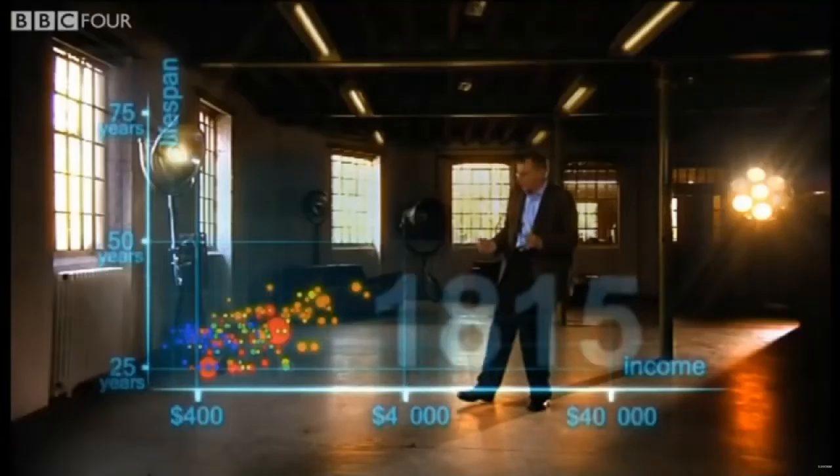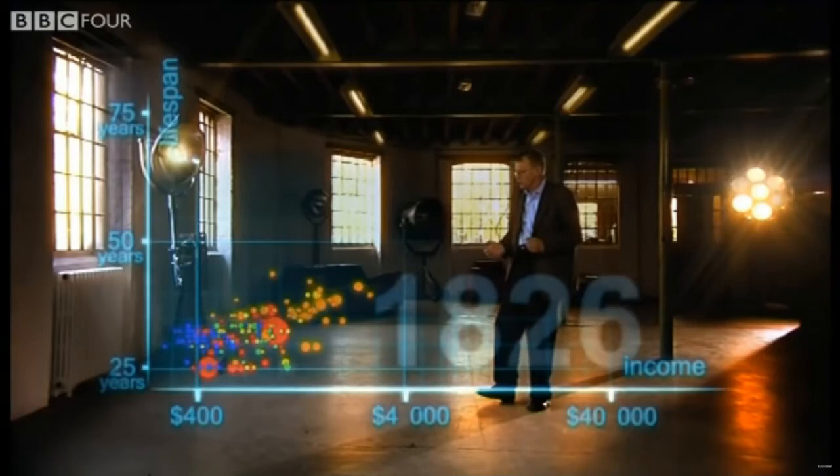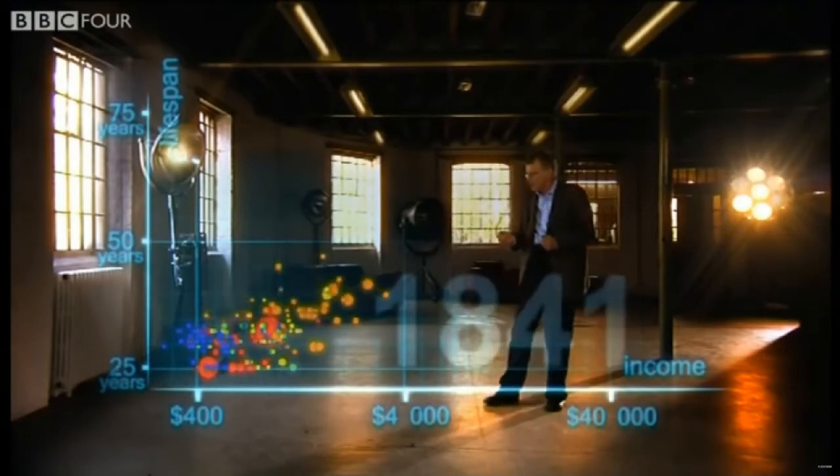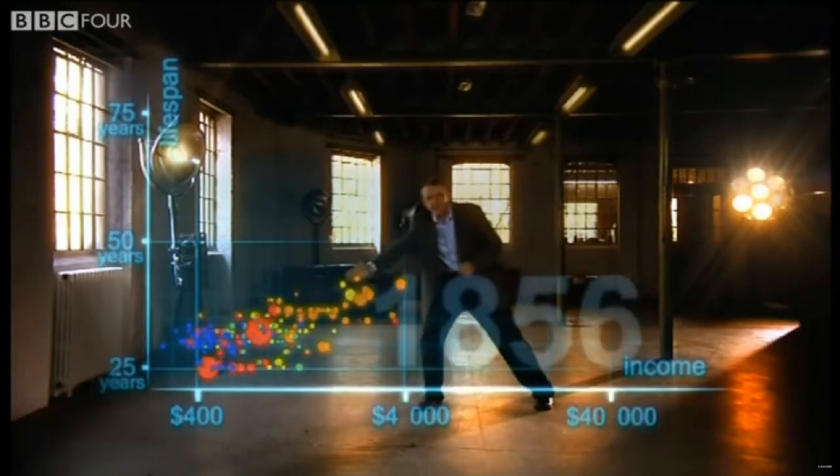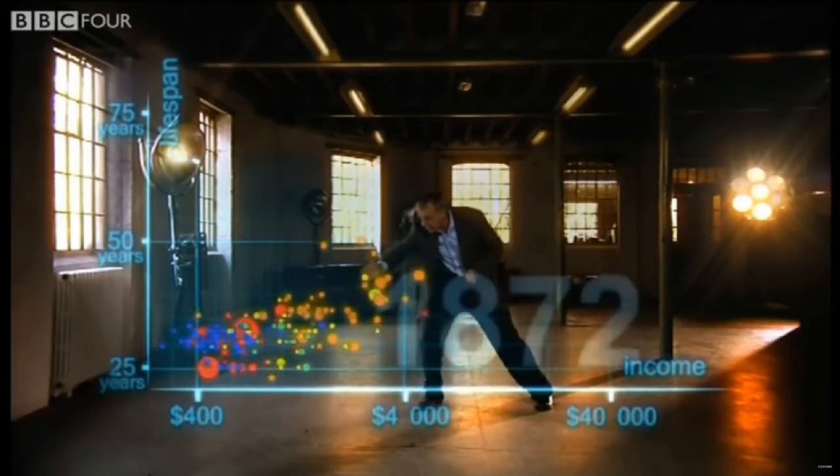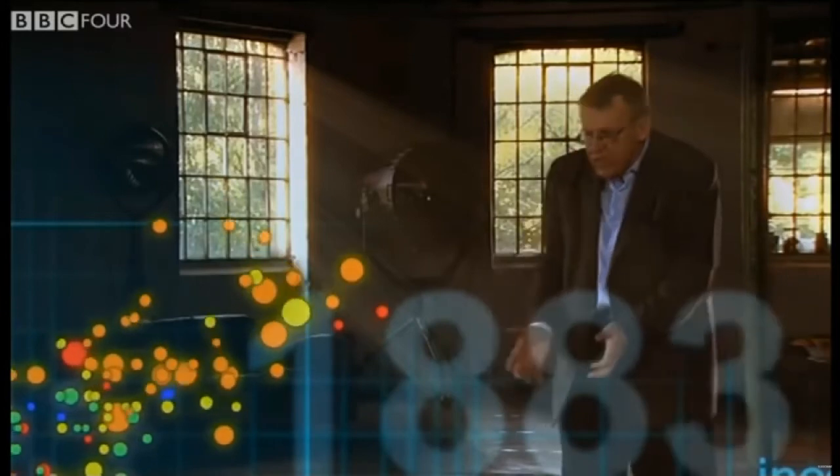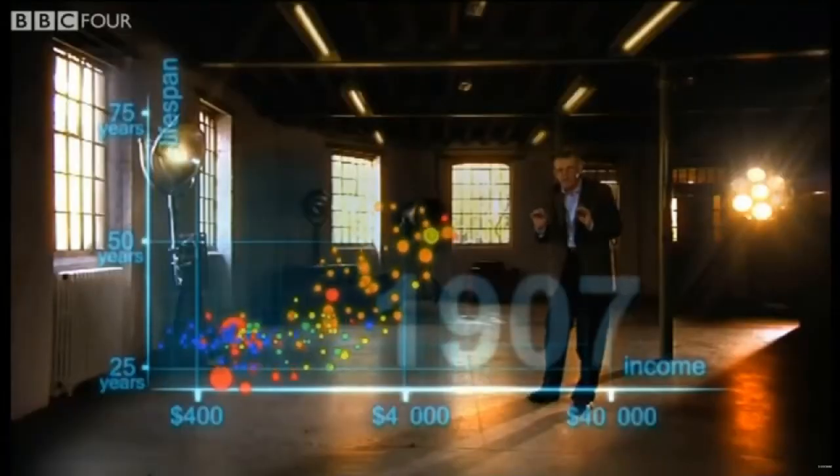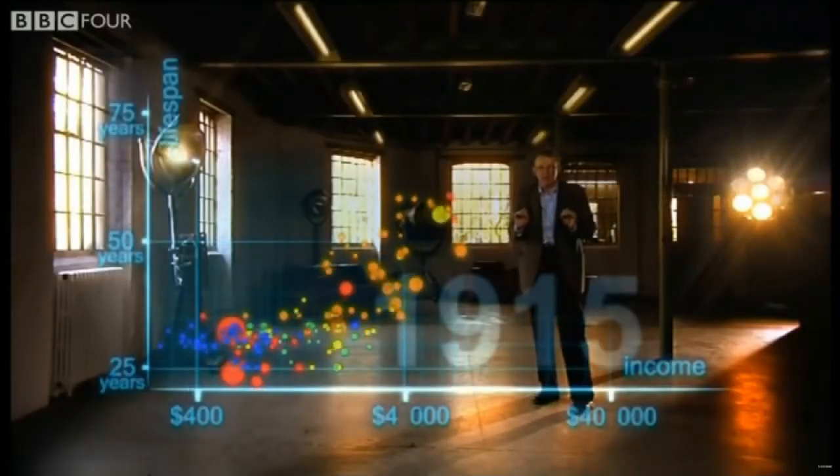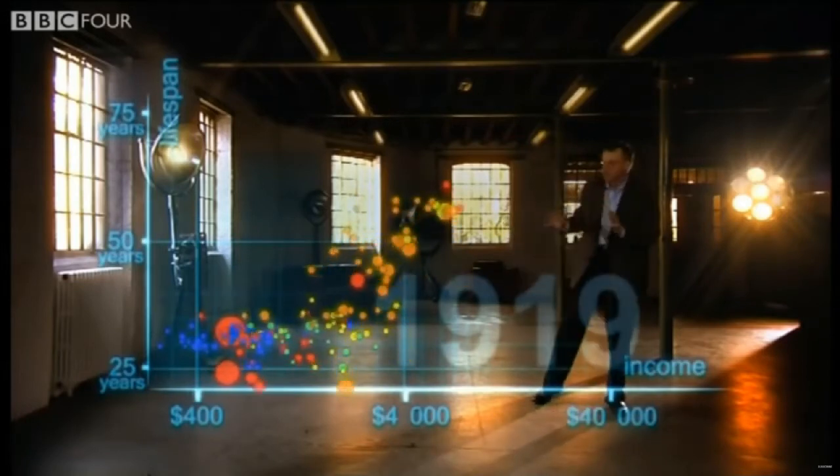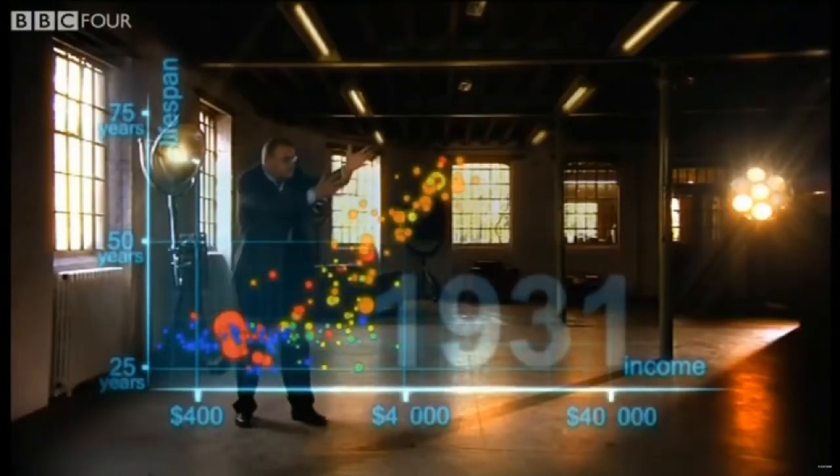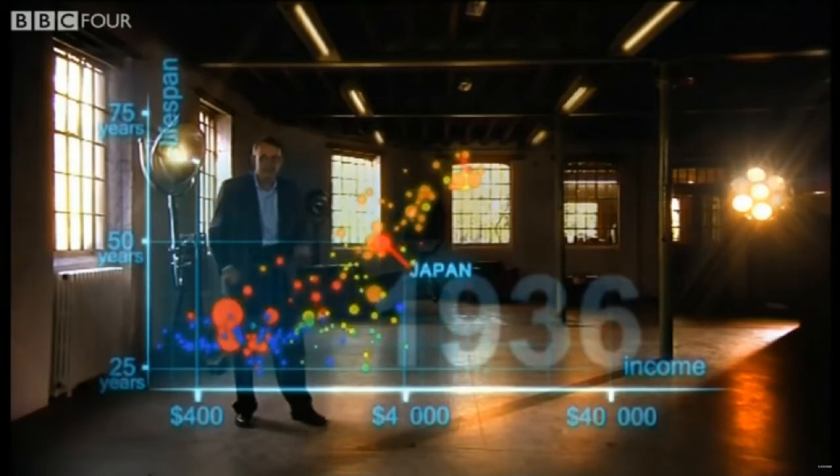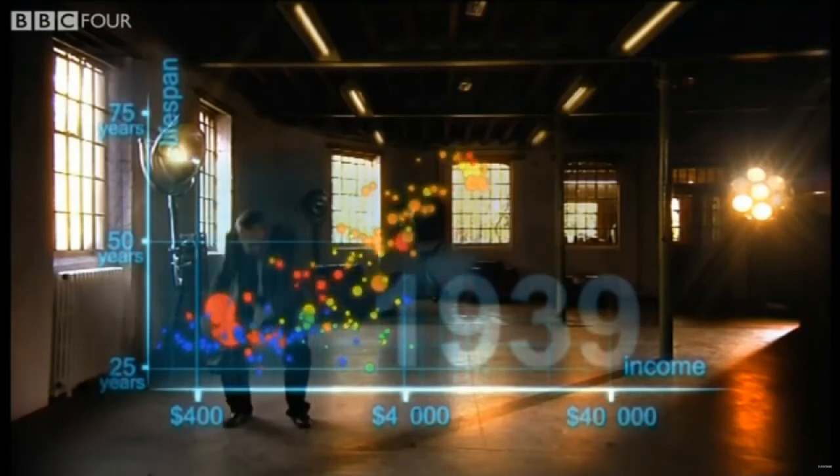And now, let's start the world. The industrial revolution makes countries in Europe and elsewhere move away from the rest. But the colonized countries in Asia and Africa are stuck down there. Eventually, the Western countries get healthier and healthier. Now, we slow down to show the impact of the First World War and the Spanish flu epidemic. What a catastrophe! Now, I speed up through the 1920s and 1930s. In spite of the Great Depression, Western countries forge on towards greater wealth and health. Japan and some others try to follow, but most countries stay down here.